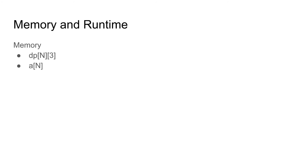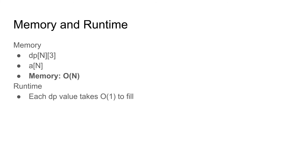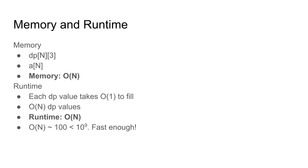Let's consider the memory and runtime. For memory, we have the DP array and the A array, both O(N), so no N-squared memory. The main runtime is filling the DP array: each DP value takes O(1) to fill, and there are O(N) DP values, giving O(N) overall. With N up to 100, this is approximately 100 operations — well under 10^9 — so this solution is fast enough and will work.